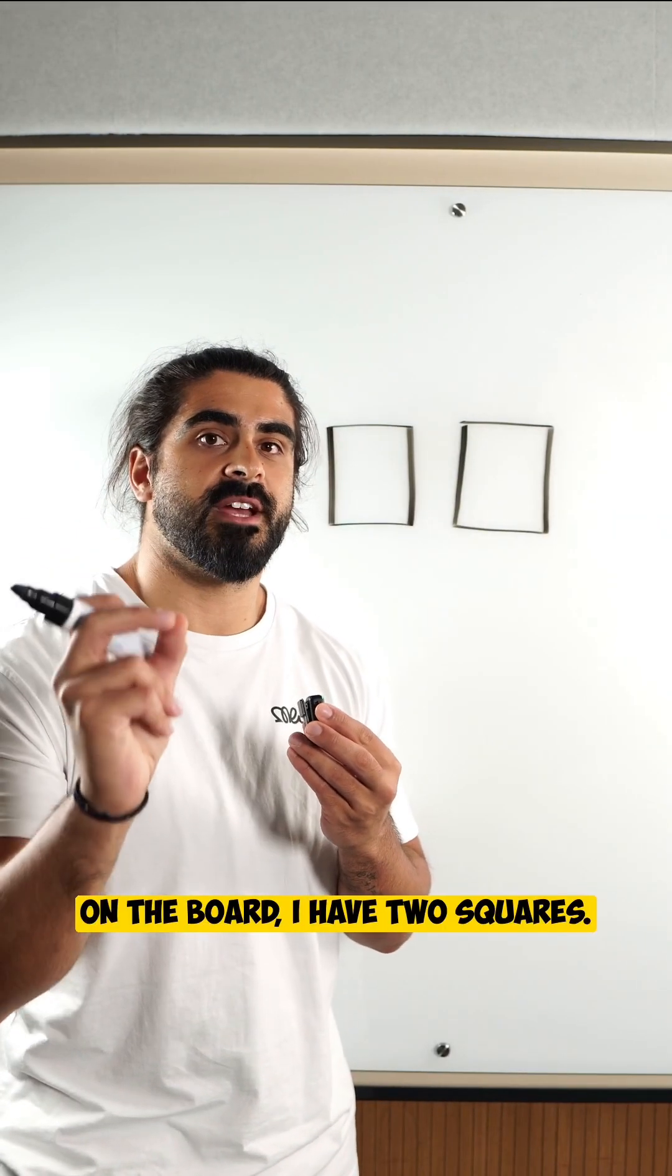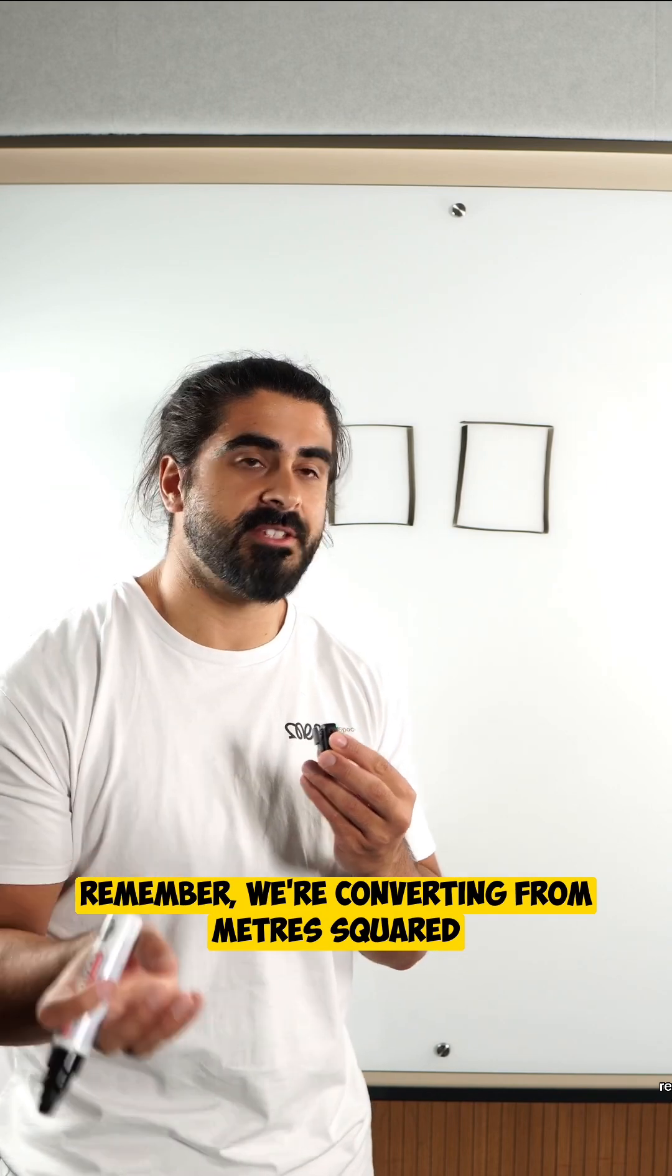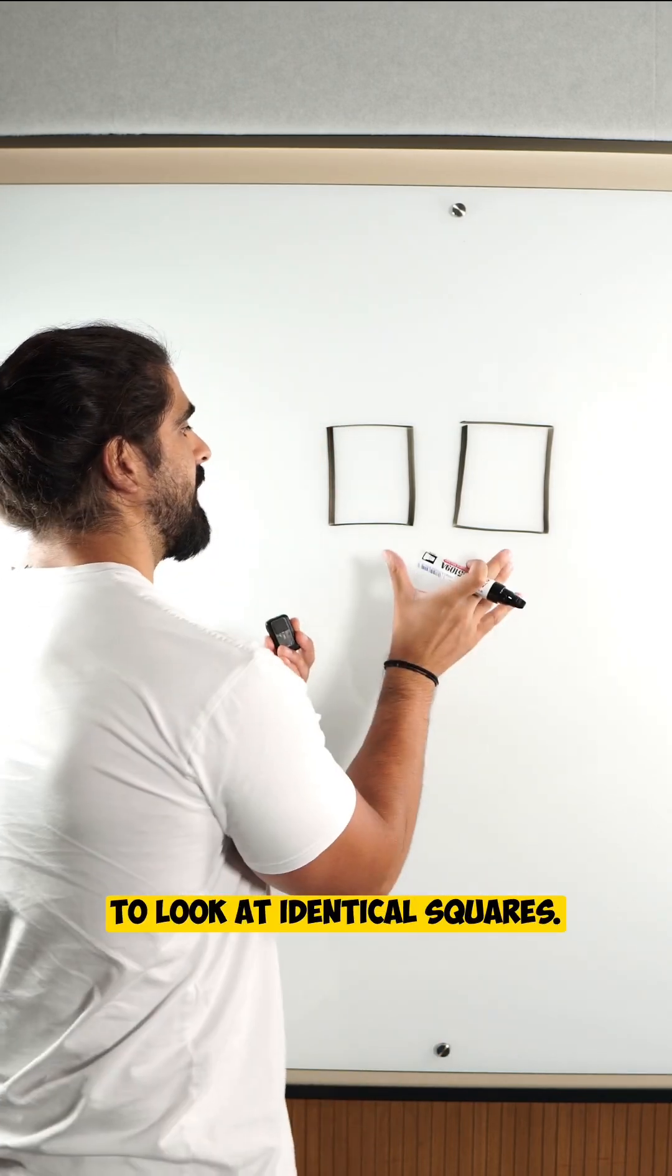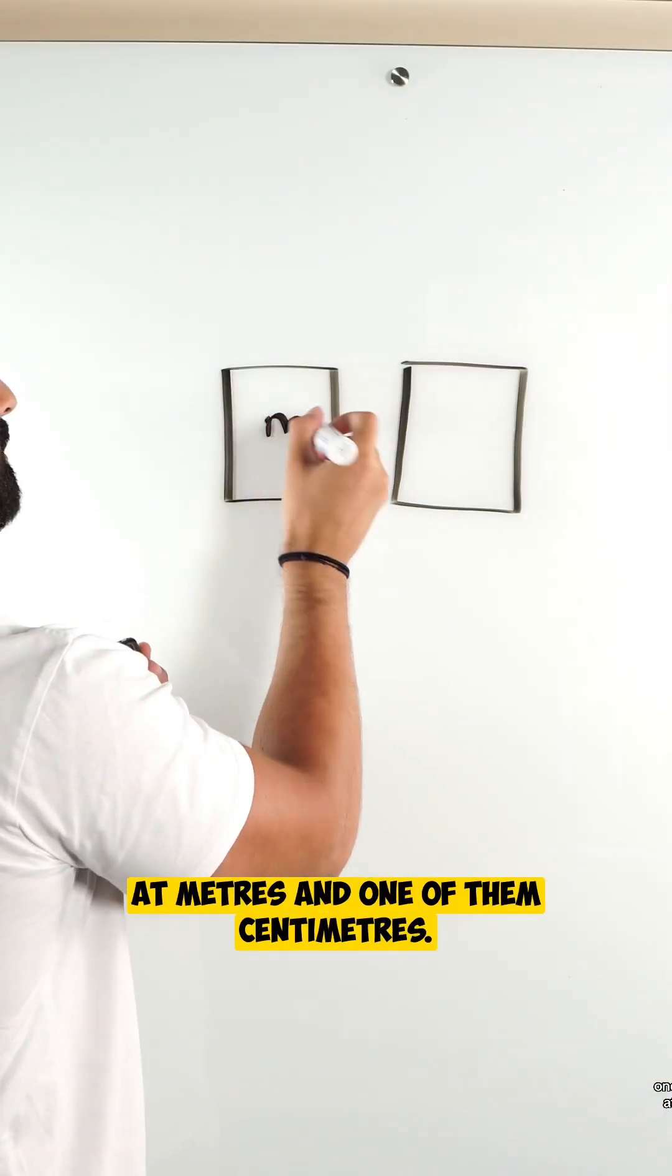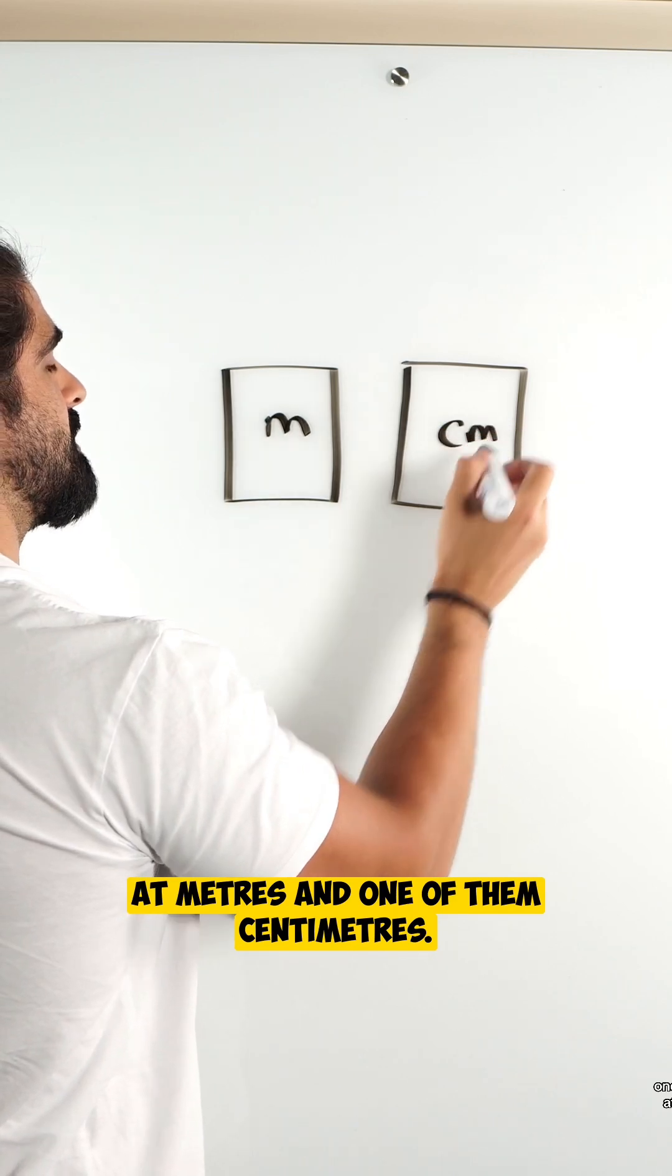On the board I have two squares. Remember we're converting from meters squared to centimeters squared and we need to look at identical squares. One of them I'm going to look at meters and one of them centimeters.